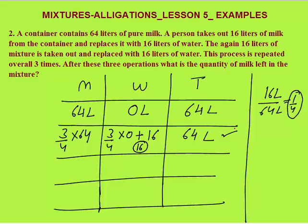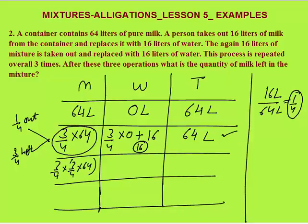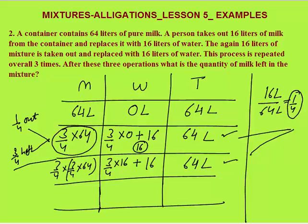Again, 16 liters is withdrawn the second time — one-fourth of solution again. Whatever ingredients are there, one-fourth will be out. The milk remaining from the first step now loses another one-fourth, so you're left with three-fourths of three-fourths of 64. Then again for the third time, one-fourth of solution is withdrawn, and one-fourth of the remaining milk goes out.